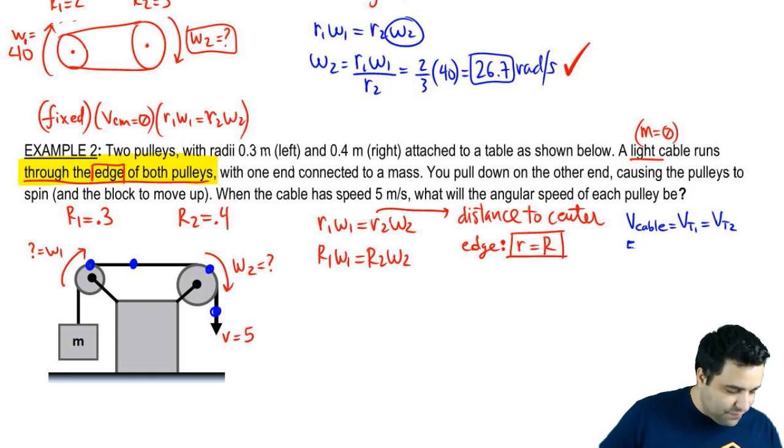So V cable, which is 5, is what equals R1 omega 1 and equals R2 omega 2.